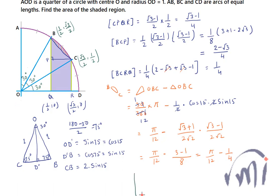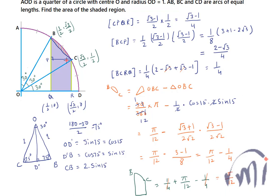The area of the shaded region equals the area of quadrilateral BCRQ plus the area of segment BC, which is 1/4 + (π/12 − 1/4). The 1/4 terms cancel, so the area of the shaded region is π/12.